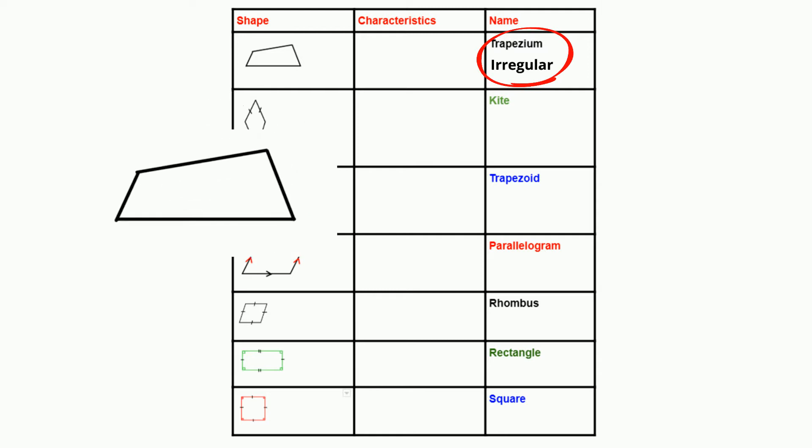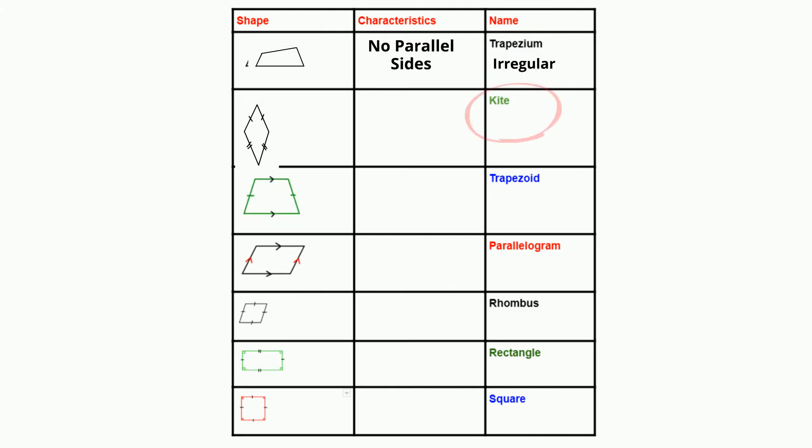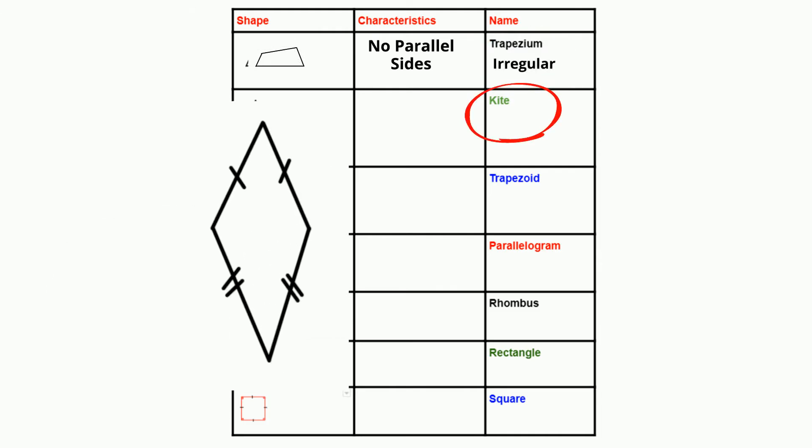A trapezium, also an irregular quadrilateral, has no parallel sides. A kite has two pairs of adjacent sides of the same length.